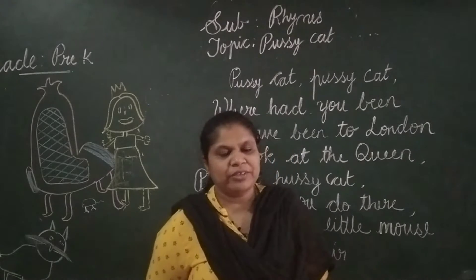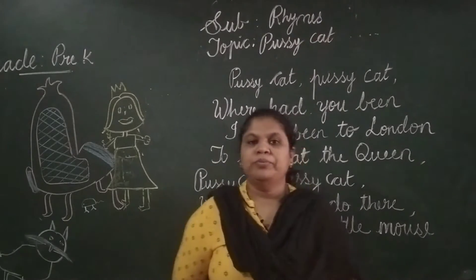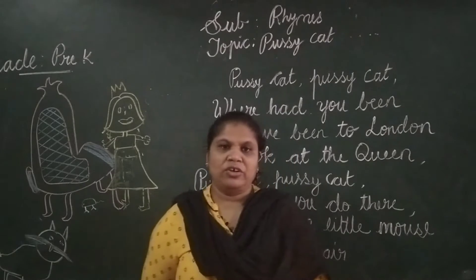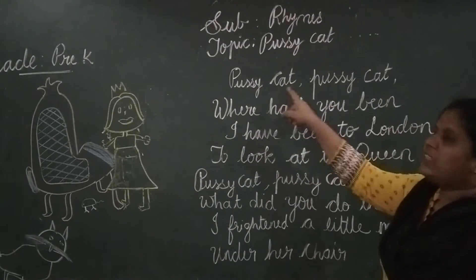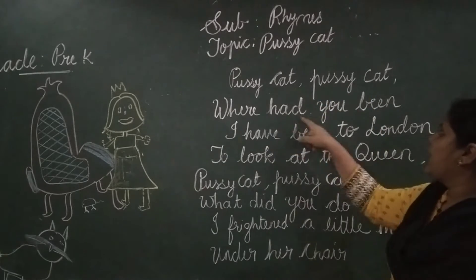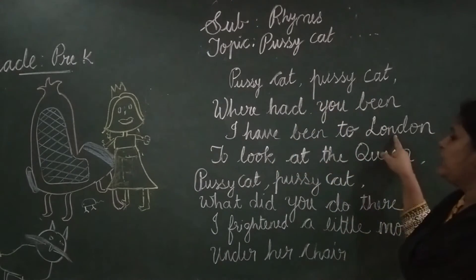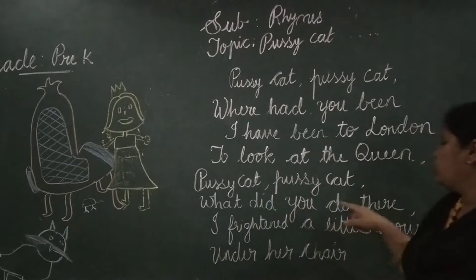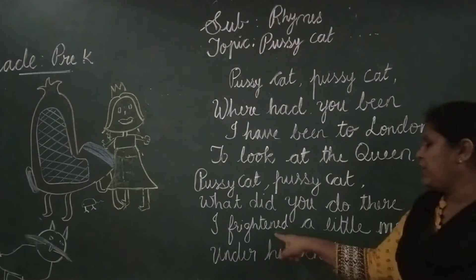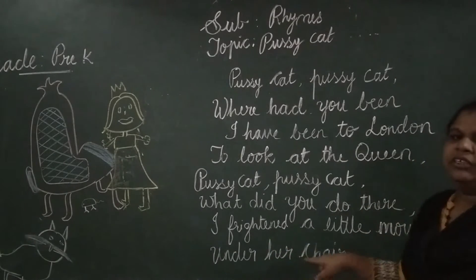Now in this rhyme class, I am going to teach you the rhyme on pussycat. Pussycat, pussycat, where can you be? I have been to London to look at the queen. Pussycat, pussycat, what did you do there? I frightened the little mouse under her chair.